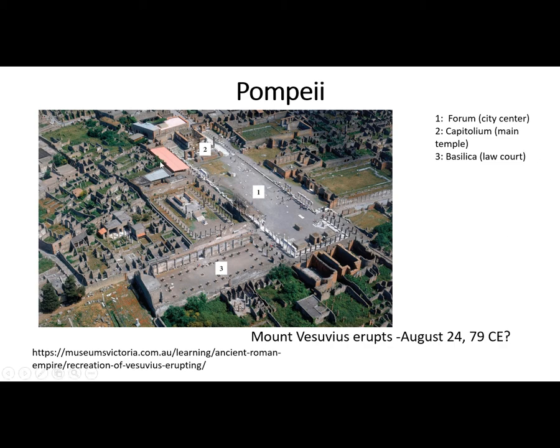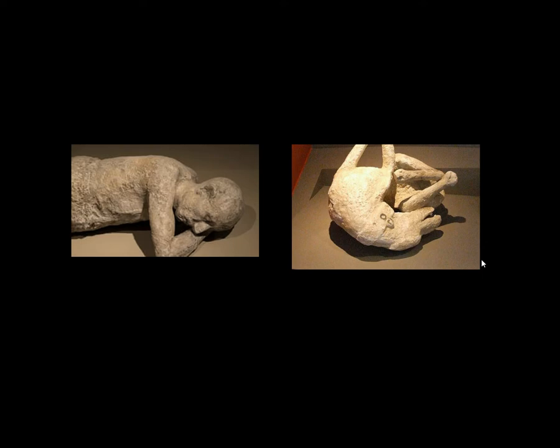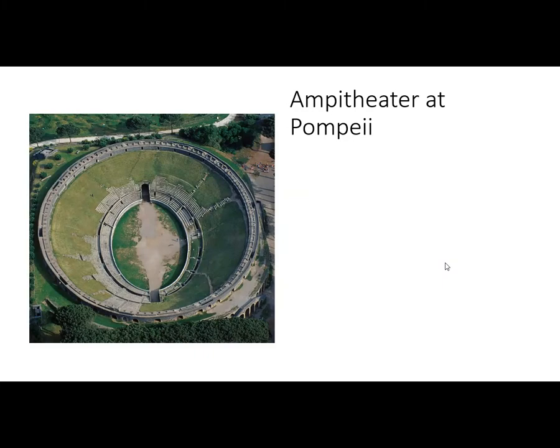We have a forum here, which is a city center, with the main temple and a basilica — a court of law — nearby. Basilicas will become something else in the near future. If you Google these, there are some pretty horrific images — everybody was frozen in time. There's a recent volcano happening in Spain right now, but this one happened very quickly. In Pompeii, we also have an amphitheater, and I bet that looks familiar — like a stadium.